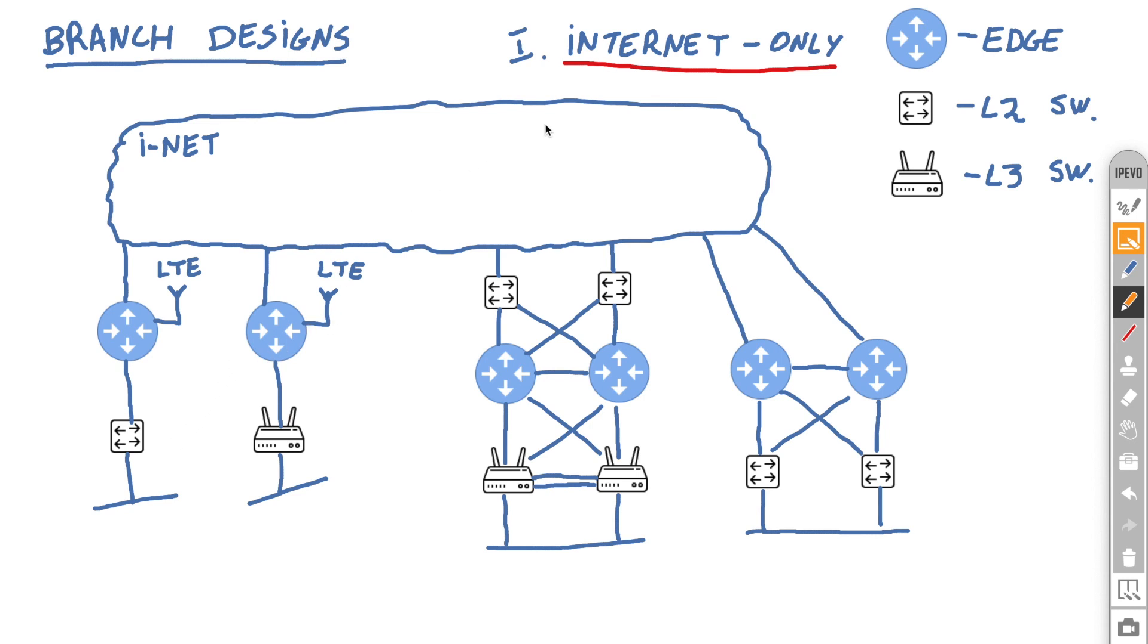To start with I wanted to focus on the internet-only branch. In my view it's easier to design because there is no MPLS connectivity, there is no underlay and underlay to overlay redistribution. I will be getting into more details on how that might be problematic if you don't design it carefully.